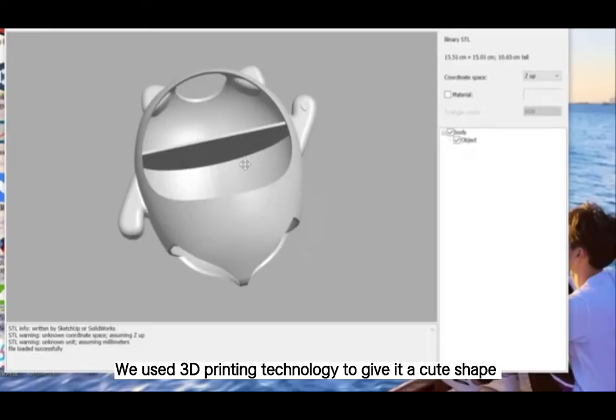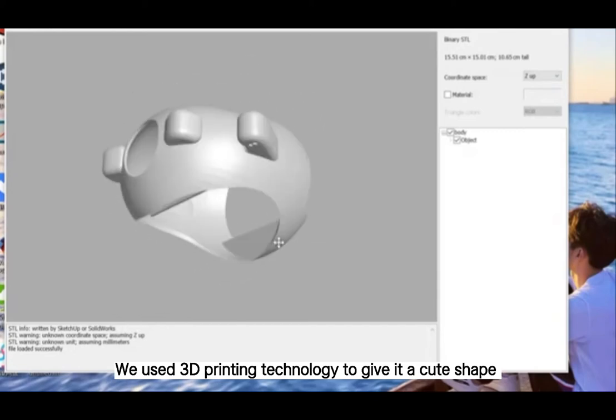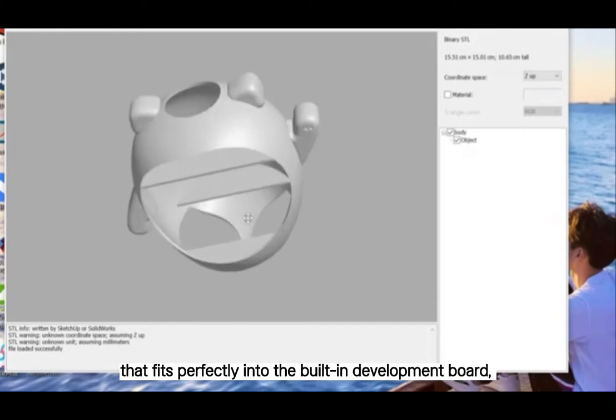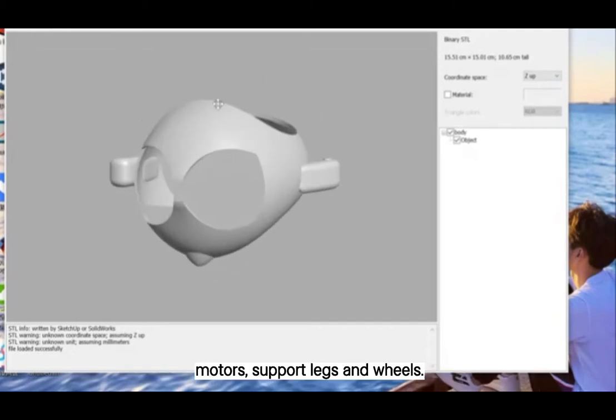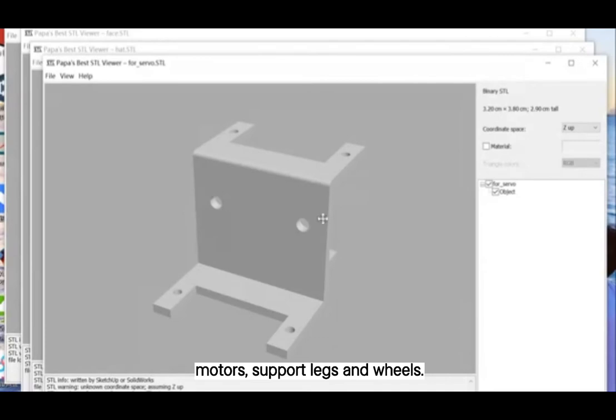We used 3D printing technologies to give it a cute shape that fits perfectly into the building, development board, motors, support, legs, and wheels.